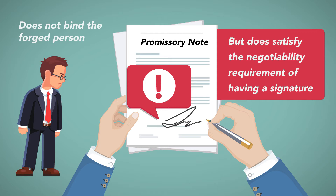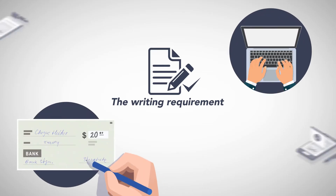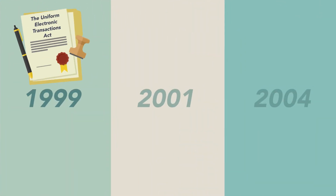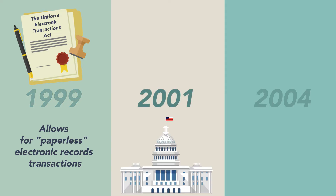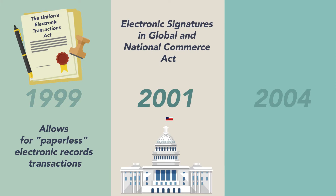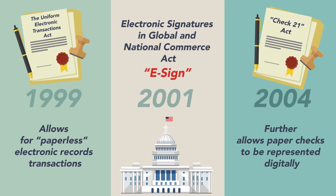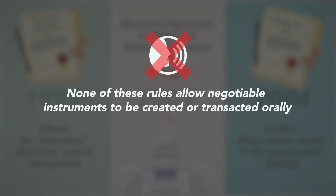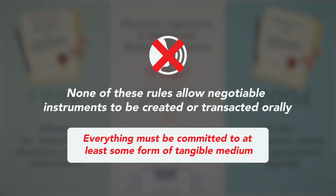It would count as his own signature to whatever extent that would help. The writing requirement can be satisfied if the obligation is handwritten, typewritten, or otherwise manifested in any tangible medium. The Uniform Electronic Transactions Act allows for paperless electronic records transactions. Moreover, in 2001, Congress enacted the Electronic Signatures in Global and National Commerce Act, abbreviated as E-Sign. The 2004 Check 21 Act further allows paper checks to be represented digitally. Note, though, that none of these rules allow negotiable instruments to be created or transacted orally. Everything must be committed to at least some form of tangible medium.